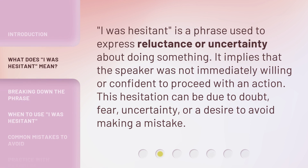'I was hesitant' is a phrase used to express reluctance or uncertainty about doing something. It implies that the speaker was not immediately willing or confident to proceed with an action. This hesitation can be due to doubt, fear, uncertainty, or a desire to avoid making a mistake.